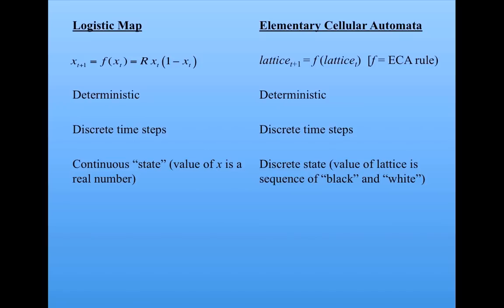In the logistic map, we have a continuous state. That is, the value of x is a real number. Whereas in a cellular automaton, the lattice configuration is a discrete state. It's a sequence of black and white cells.